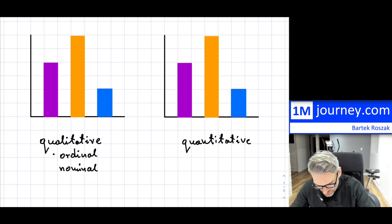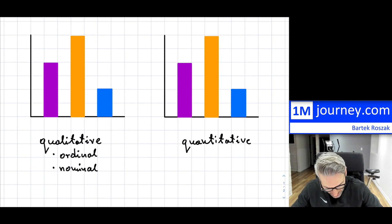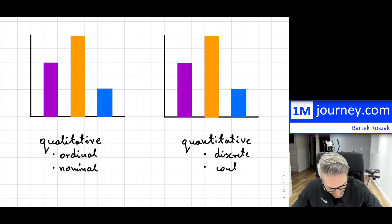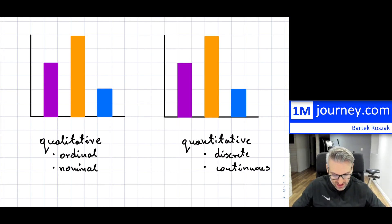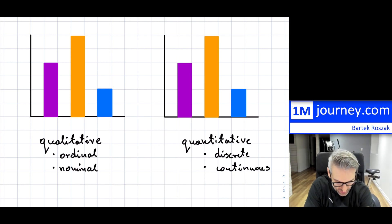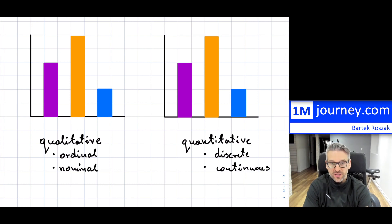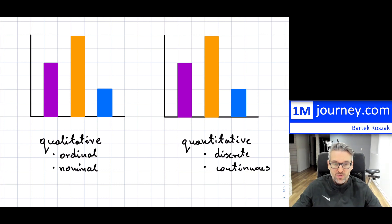On the quantitative side, we have either discrete or continuous. If you want to know the key distinguishing features between discrete and continuous, you can watch the link I pointed out covering qualitative and quantitative studies.